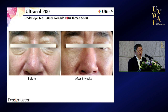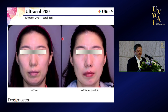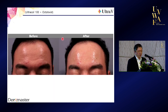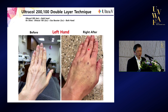This is a patient where I used Super Tornado — five pieces of thread here, here, here, here, and here — combined with UltraCol 100. These are Dr. Ham's photos. Also, it's very good for forehead wrinkles: I use one Octo Twist thread combined with UltraCol 100.